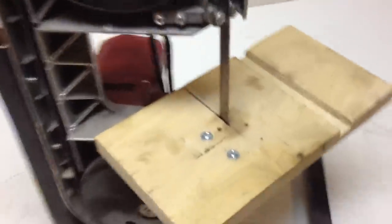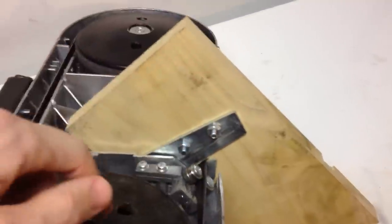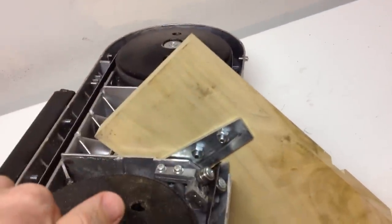What comes on the bandsaw originally is just this little plate. It's just a little metal plate, little blade guide, which it works fine if you're just using it as portable. But I needed something that was a little more substantial.